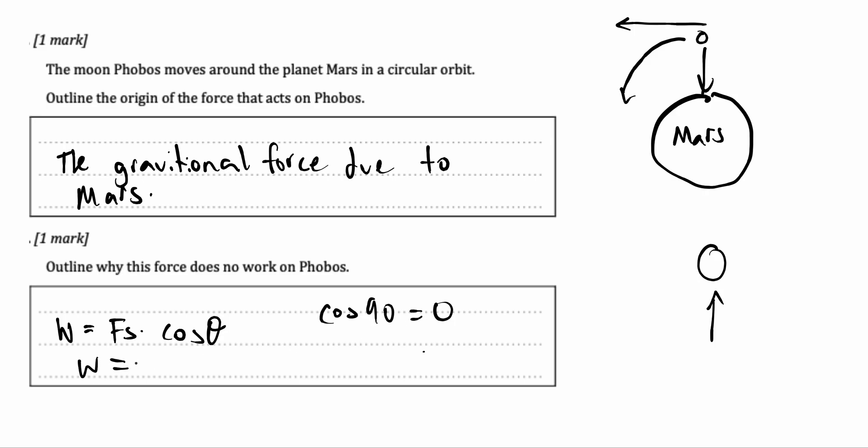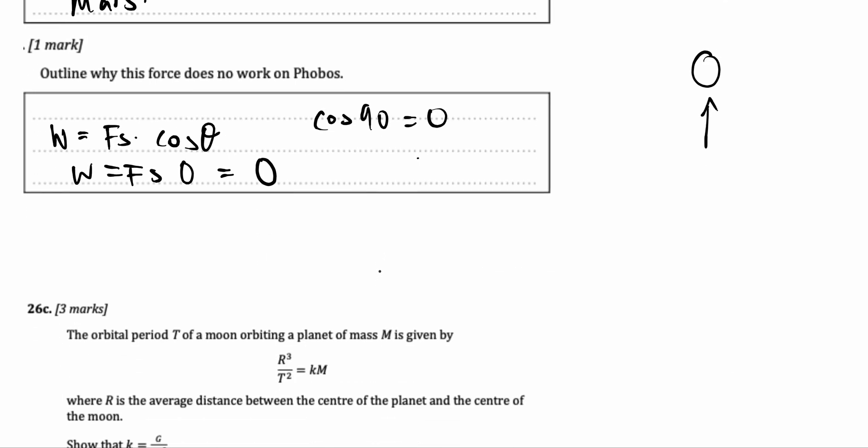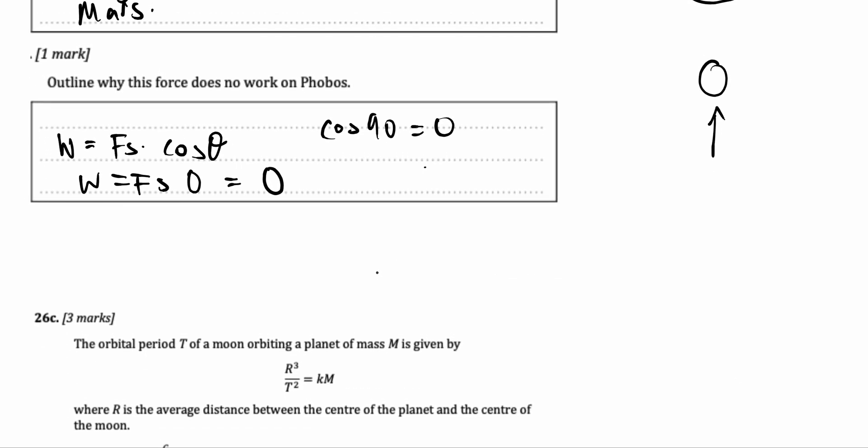So putting that all into our equation, Fs times zero, we get that work is equal to zero. In summary, work is equal to zero because force is acting perpendicular to the surface. Using the equation Fs cos theta, we can understand this better.